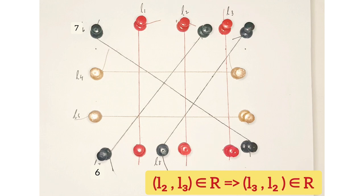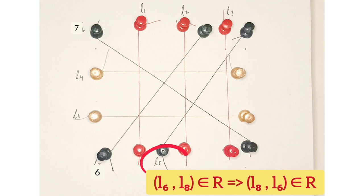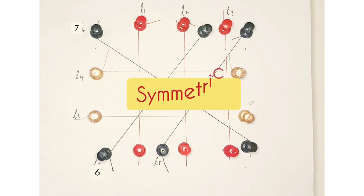(L2, L3) belongs to R implies (L3, L2) belongs to R. Also, (L6, L8) belongs to R implies (L8, L6) belongs to R. Hence, the given relation R is symmetric.